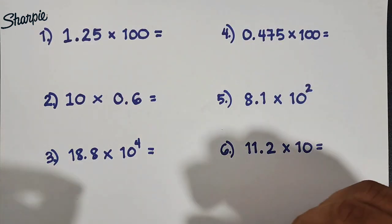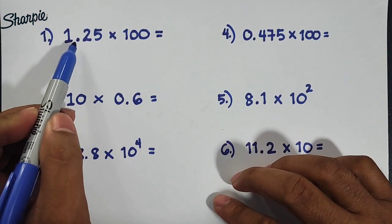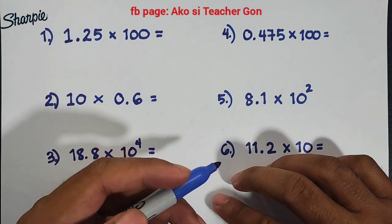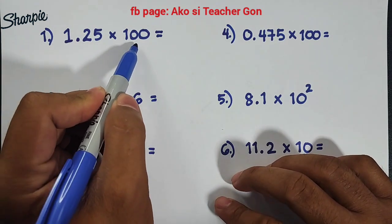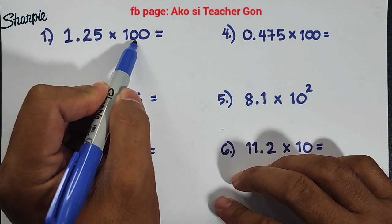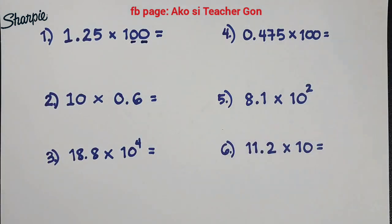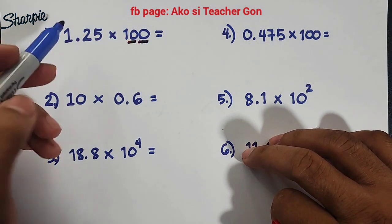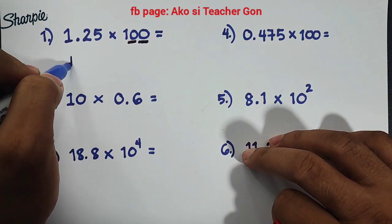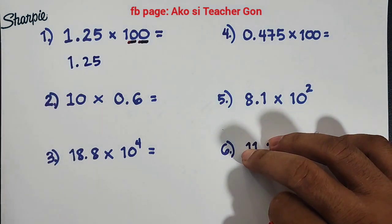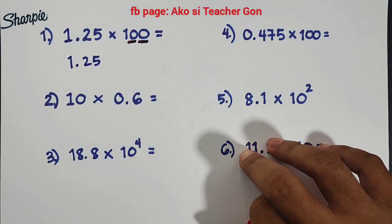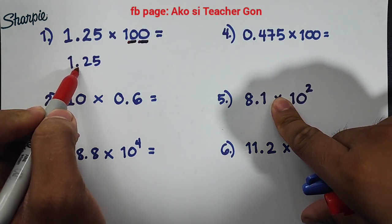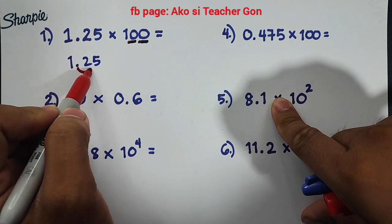So we have here 6 different questions. In number 1, we are given 1.25 times 100. There's a shortcut on how to multiply this, not manually. What you need to do is to count the number of zeros. In 100, we have 2 zeros. We will copy 1.25, and since the number of zeros is 2, we will move the decimal point from left to right — 1 and 2.